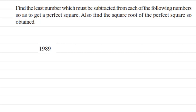You also need to find the square root of the perfect square obtained. Here the number is 1989. Let's see - the first step is the same.